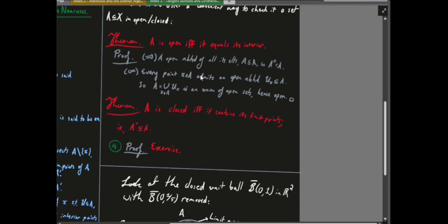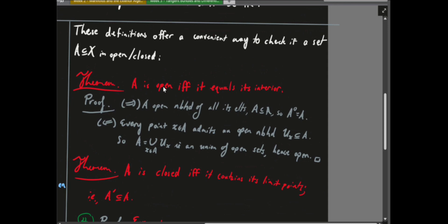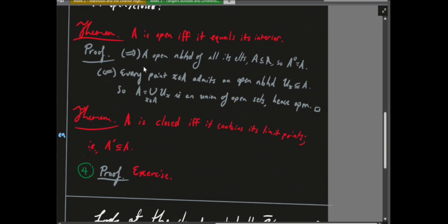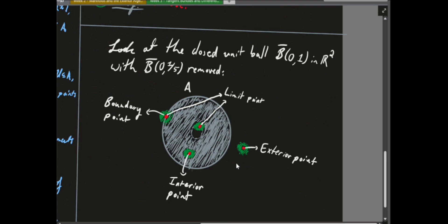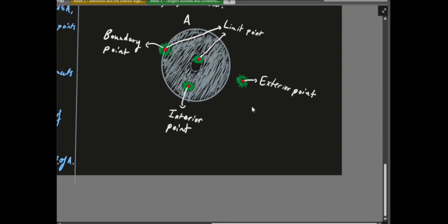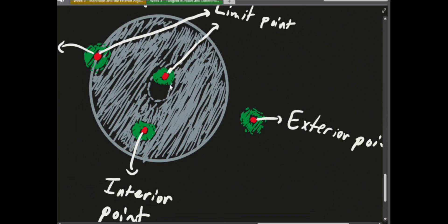A set is open if and only if it equals its interior — every point in the set is an interior point. This is true of all topological spaces, every subset of a topological space. A set is closed if and only if every limit point of the set is contained within the set. The annulus is not closed because the points on the interior boundary are limit points not contained within the set.